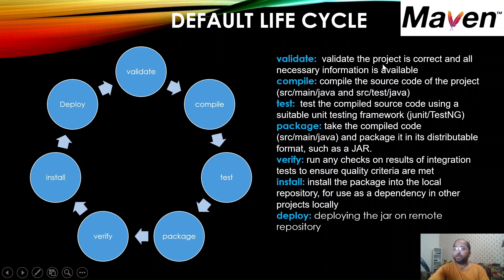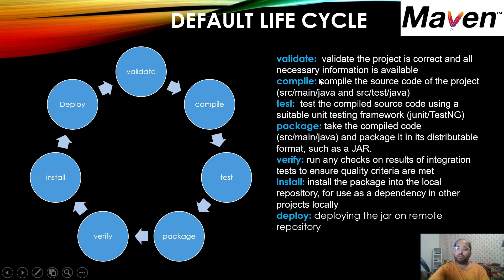The validate phase is used to validate whether all the necessary information is available or not. For example, if there is a typo error in pom.xml, this phase will let us know. Then we have the compile phase, which will compile the source code of the project — SRC main Java and SRC test Java will be conditionally compiled.